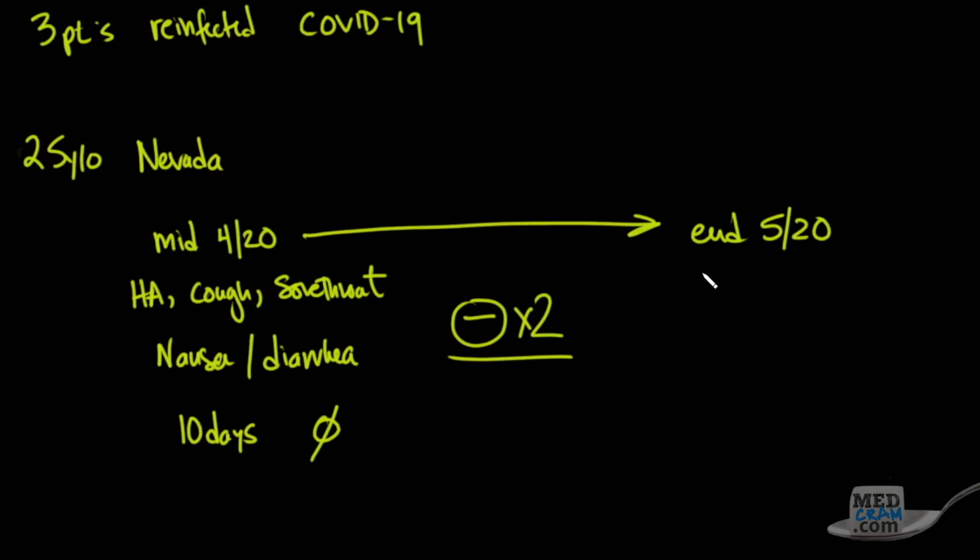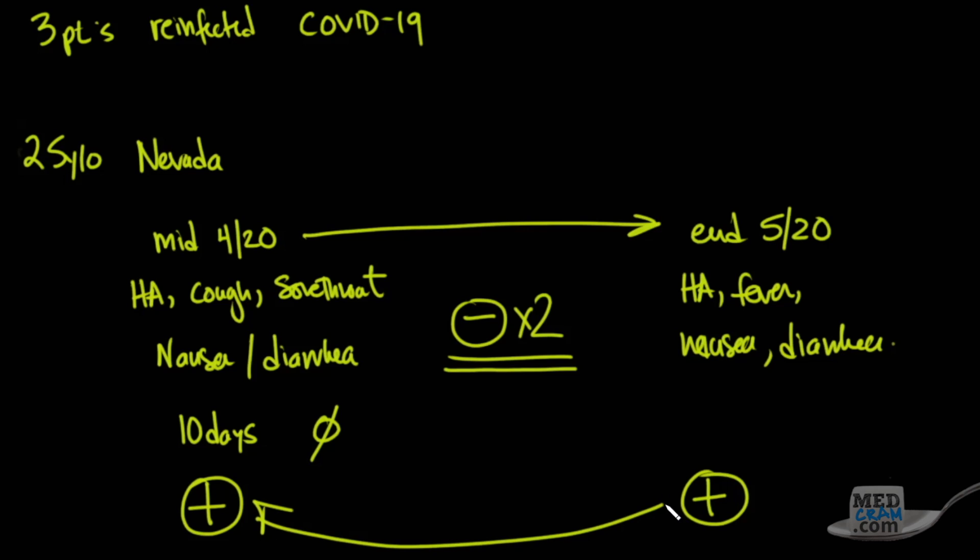The patient tested positive, so he tested positive at the first case, then tested negative times two before testing positive again. When they compared the genomes of these two positivities, they found that they were different. There were a number of differences in the RNA or genomic material of these viruses. Both of them, however, were SARS-CoV-2.